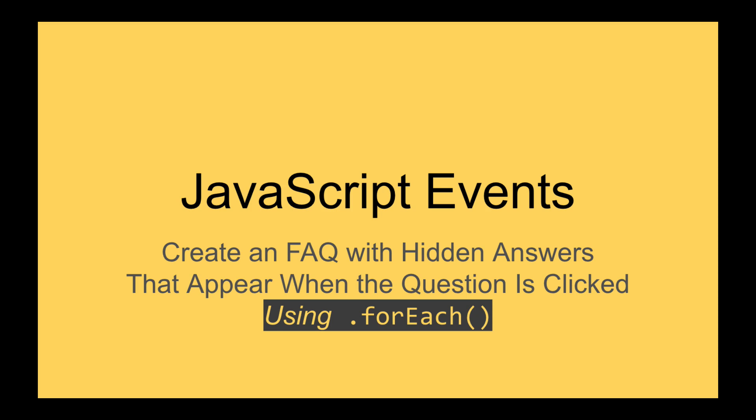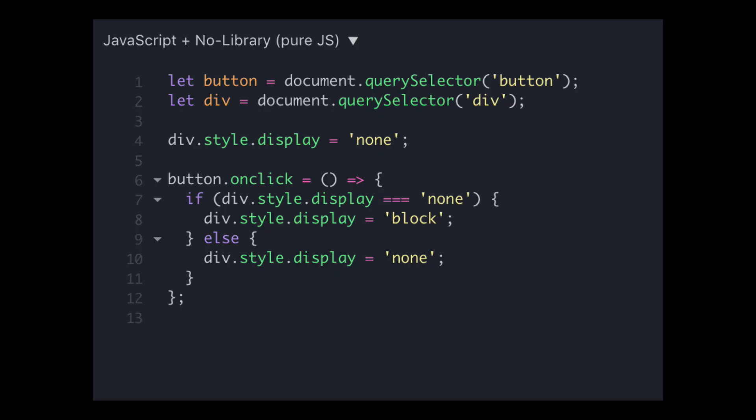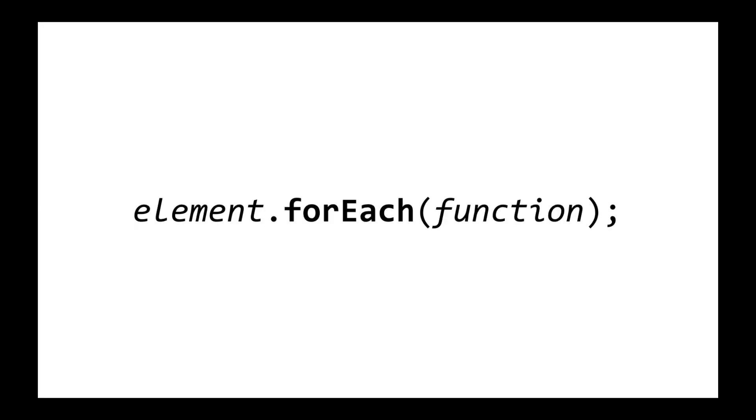This is the third video in a series about JavaScript events. In the previous video, we covered how to toggle showing and hiding a div. The same thing would work for showing and hiding any kind of element on a web page. But what if you wanted to hide and show a lot of things? Would you have to write separate event listeners and separate functions for each one? No. There's a method called forEach, and we're going to explore that in this video.